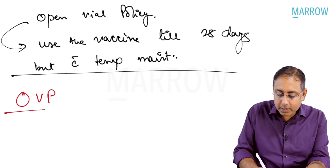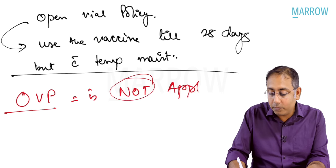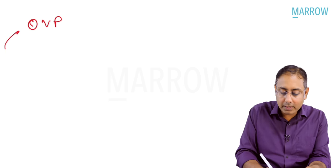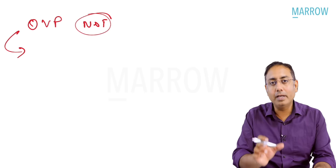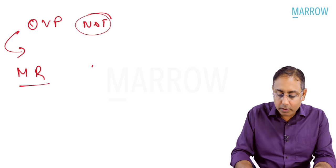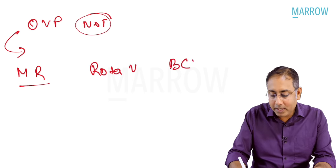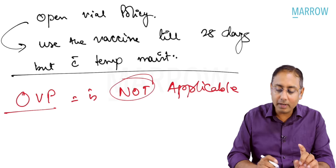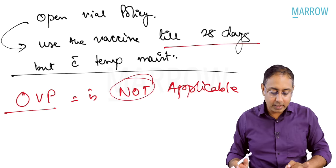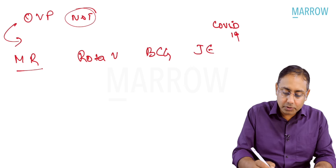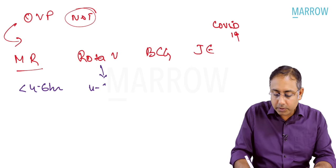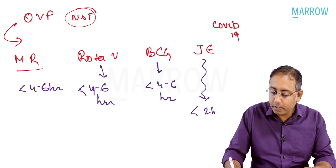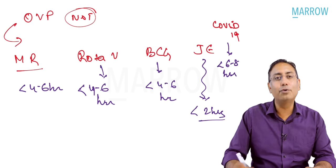The open vial policy is NOT applicable to: MERA (Measles-Rubella), ROTA (Rotavirus), BICHARA (BCG), JIJA (Japanese Encephalitis), and COVID-19 vaccines. MR, Rotavirus, and BCG must be used within 4–6 hours of opening; Japanese Encephalitis within 2 hours; COVID-19 within 6–8 hours. Pentavalent is under open vial policy; MR is not.